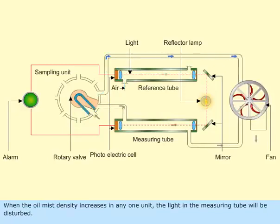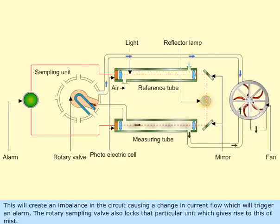When the oil mist density increases in any one unit, the light in the measuring tube will be disturbed. This will create an imbalance in the circuit causing a change in current flow which will trigger an alarm.